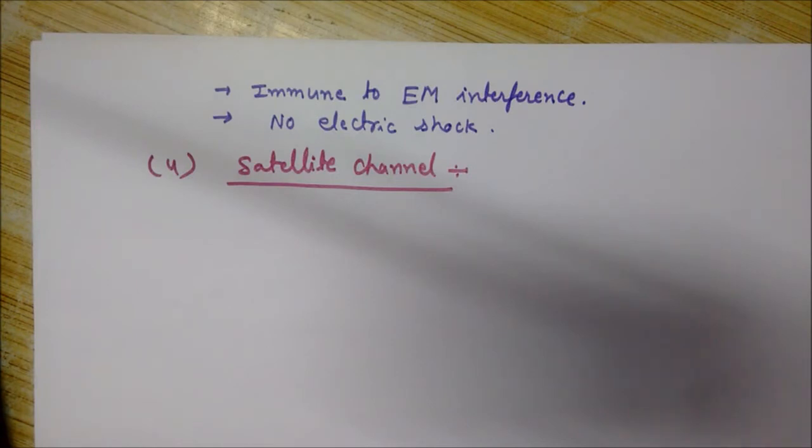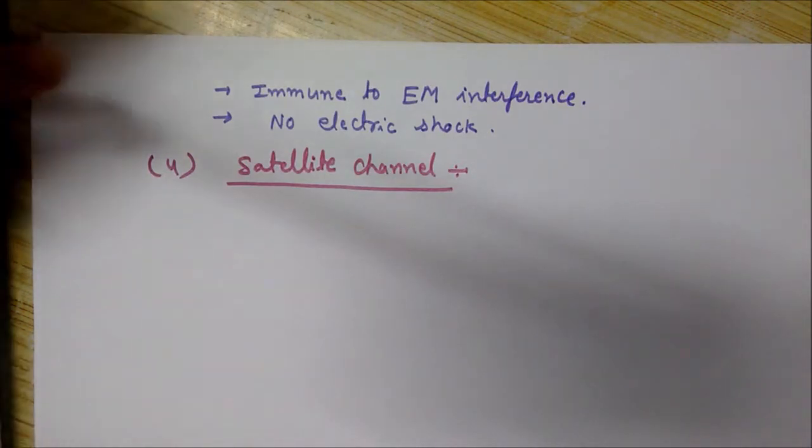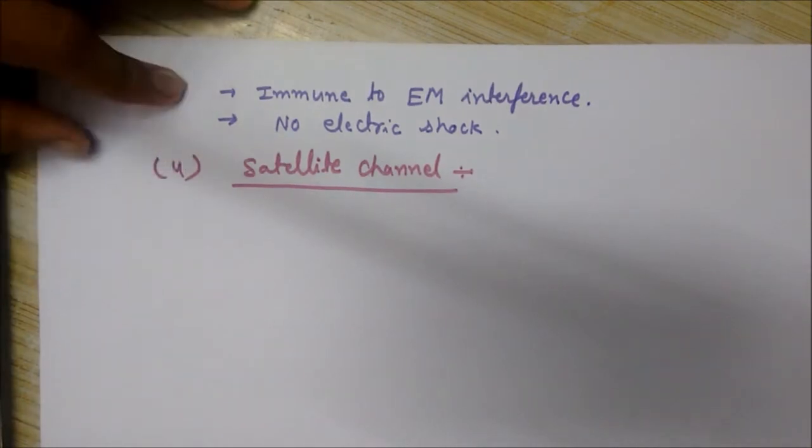Satellites are situated in the geostationary orbit at an altitude of 22,300 miles from the earth. They are placed directly above the equator on an eastward heading. Let me draw a diagram so the concept becomes more clear to you.